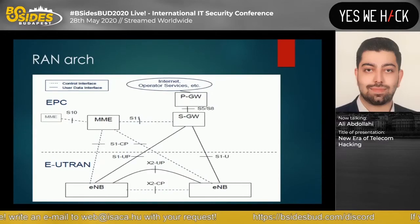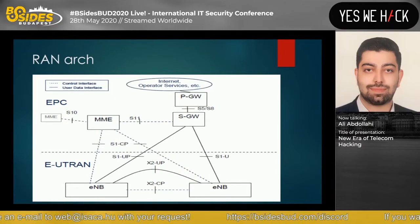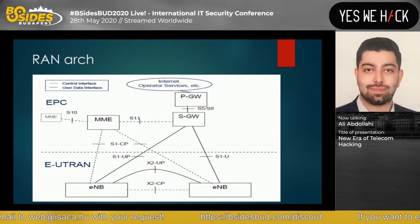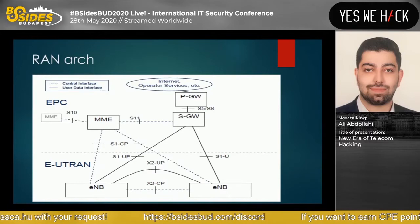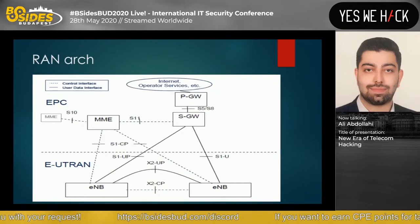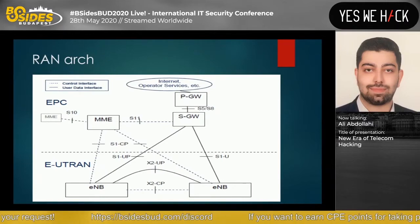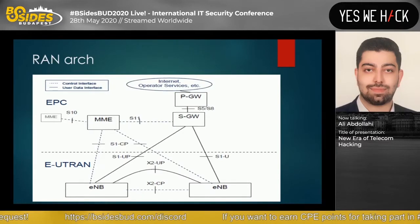Now let's review the high-level architecture of the Radio Access Network. In RANs we have a cell tower — BTS in 2G, Node-B in 3G, and E-Node-B (Evolved Node-B) in 4G LTE. You can see that the E-Node-B passes your traffic to the PS and CS networks. If you want internet, your traffic goes through the PS network; if you want to make a call or send an SMS, the traffic goes through the CS network.